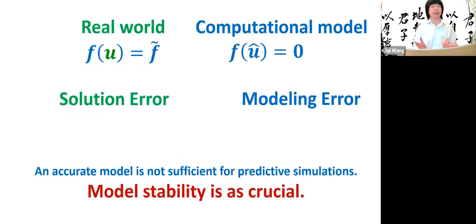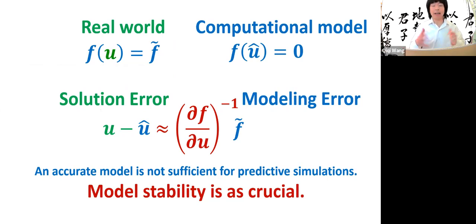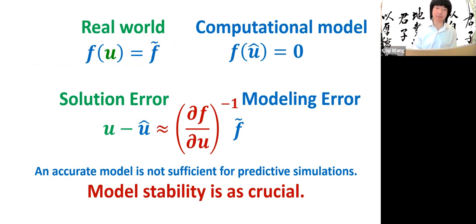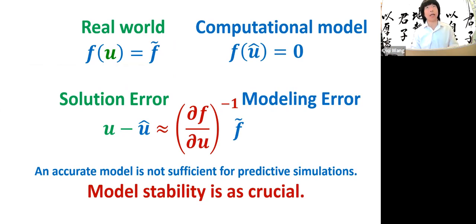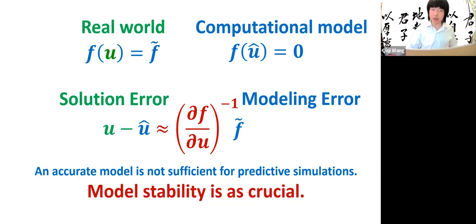What we learned from this is that the modeling error and the solution error are related by the inverse of the Jacobian, and model stability is as crucial as an accurate model. What I want to talk about today is how we can generalize this concept when the computational model is not an algebraic model but a dynamical system — in particular, a chaotic dynamical system. How can we generalize the notion of model stability from classical steady-state computation to unsteady high-fidelity modeling?